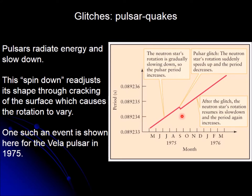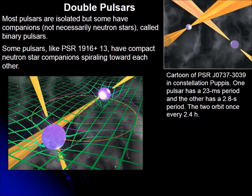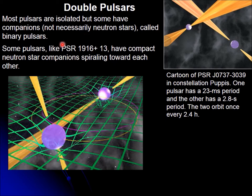Just like we have binary systems, we can have binary pulsars. Most pulsars are isolated, but some have companions not necessarily neutron stars — these are known as binary pulsars. Some are two pulsars bound to one another, such as PSR 1916+13, in which two pulsars orbit one another.